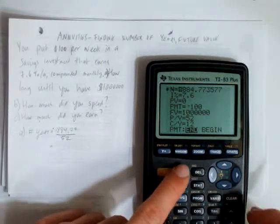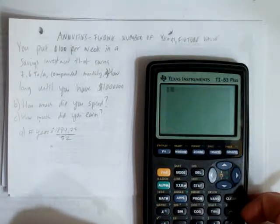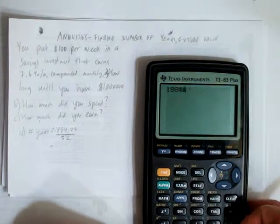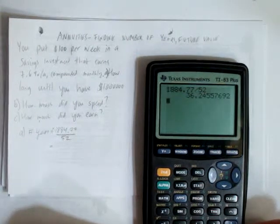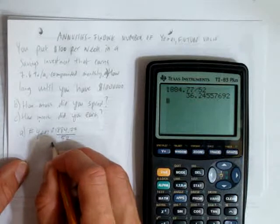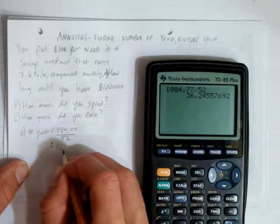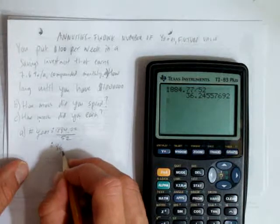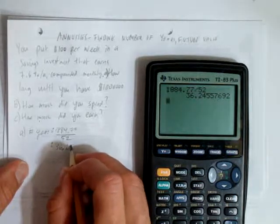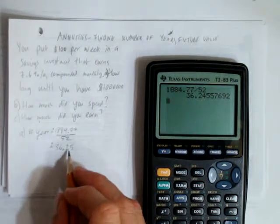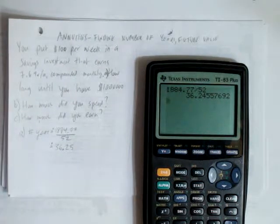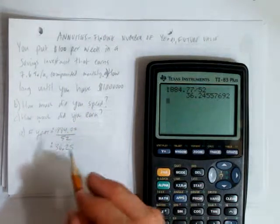We'll need to get out of here. So second mode to quit, and we'll do 1,884.77 and divide that by 52, and what we get is approximately 36, and let's round to, how about two decimal places this time, 36.25 years, or about 36 years and three months. So that's how long it'll take to have that million dollars.